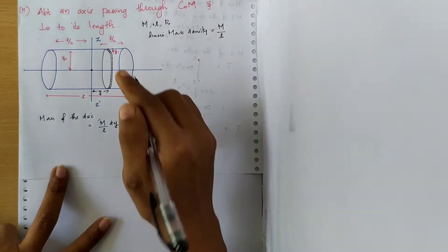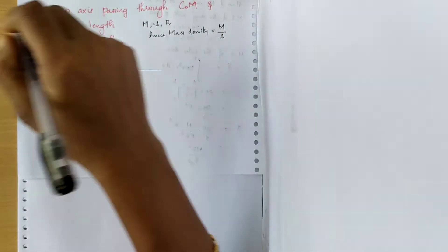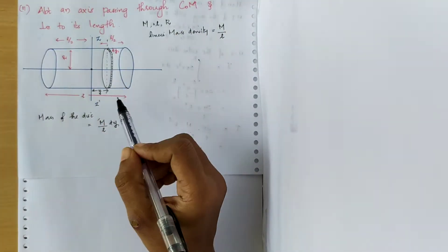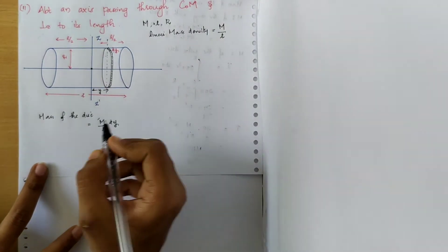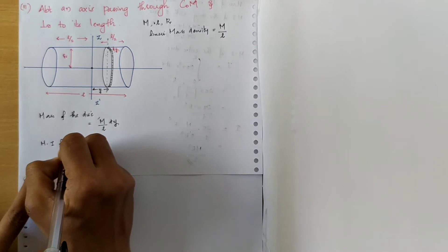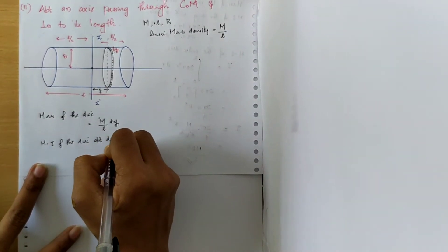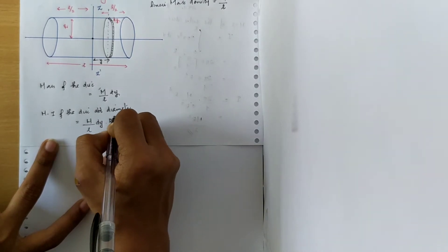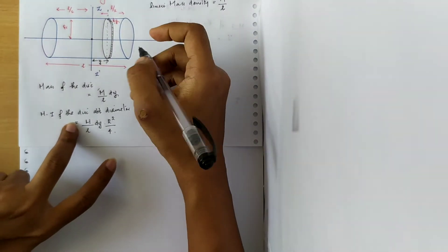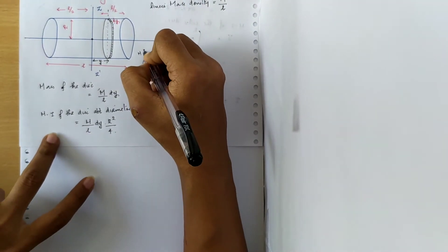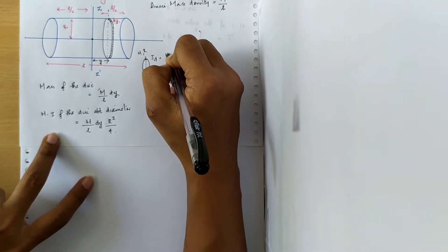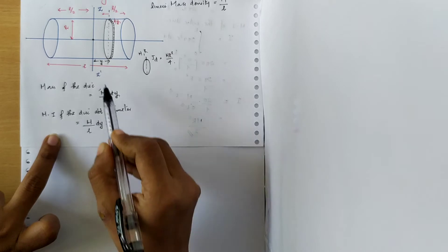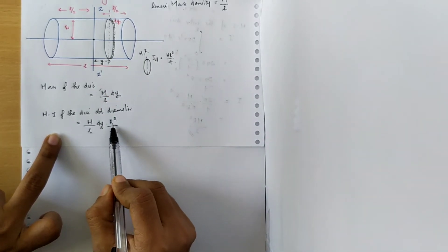Now we find the moment of inertia of this disc about its diameter. The moment of inertia of this disc about its diameter is given by (M/L · dy) · R²/4. This is because for a disc of mass m and radius R, the moment of inertia about the diameter is mR²/4. Here we substitute the mass of the disc, which is M/L · dy, in place of m.